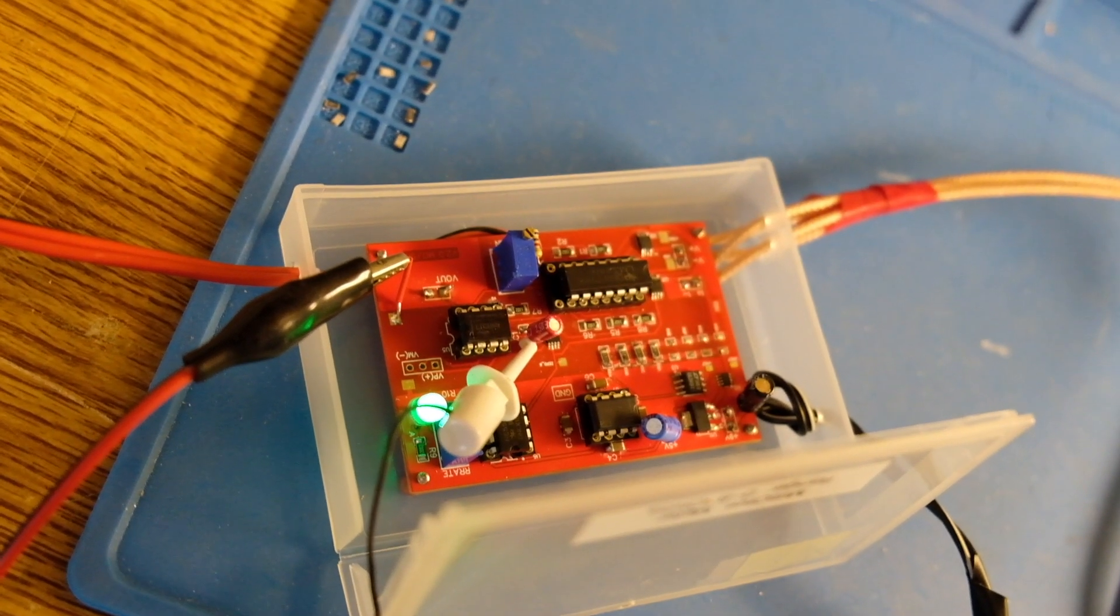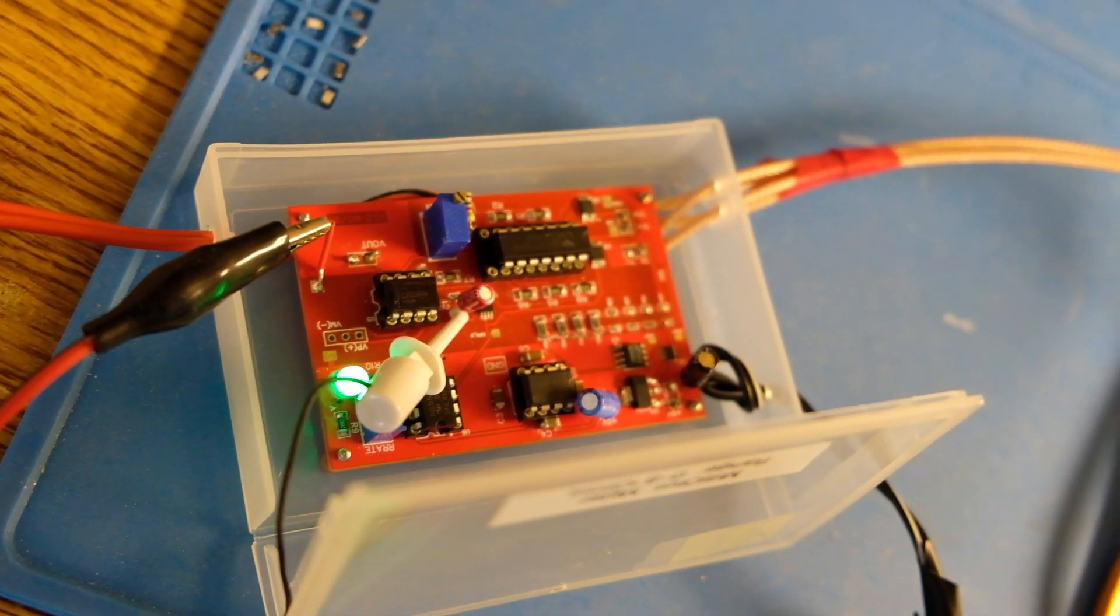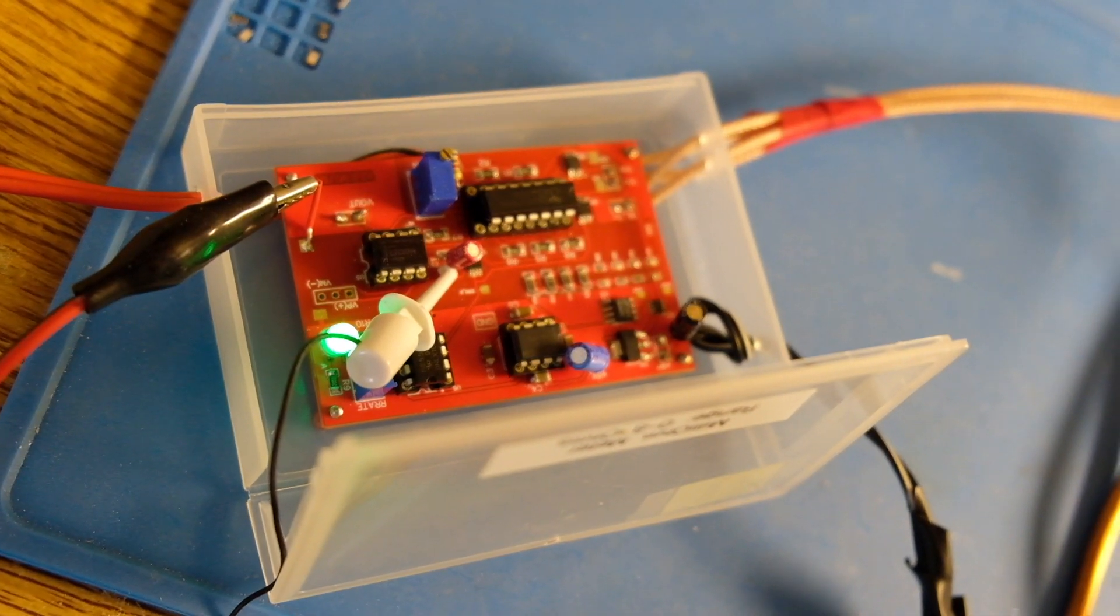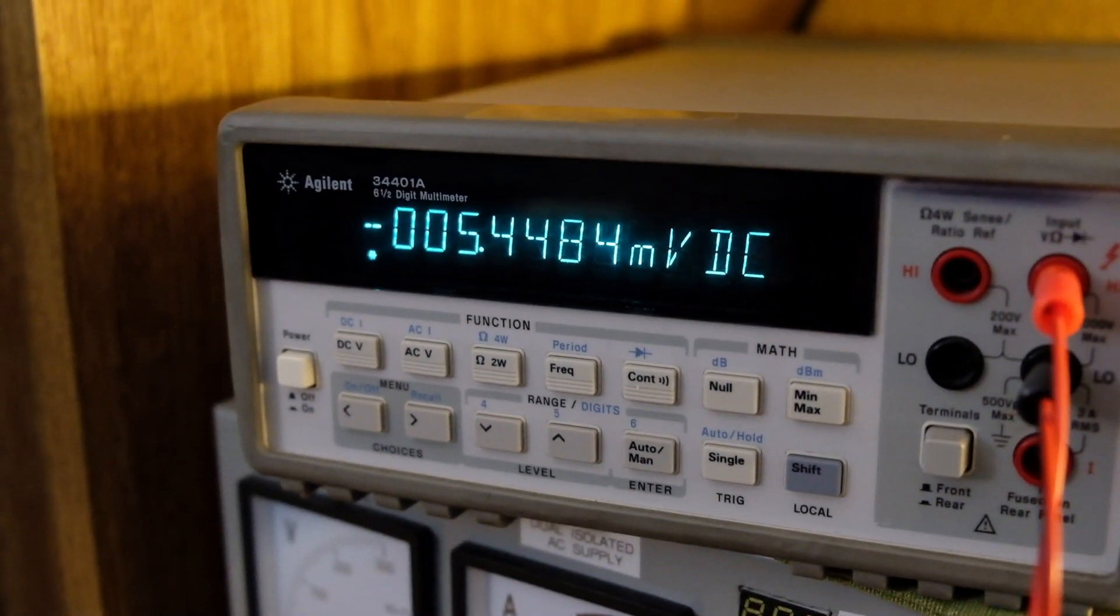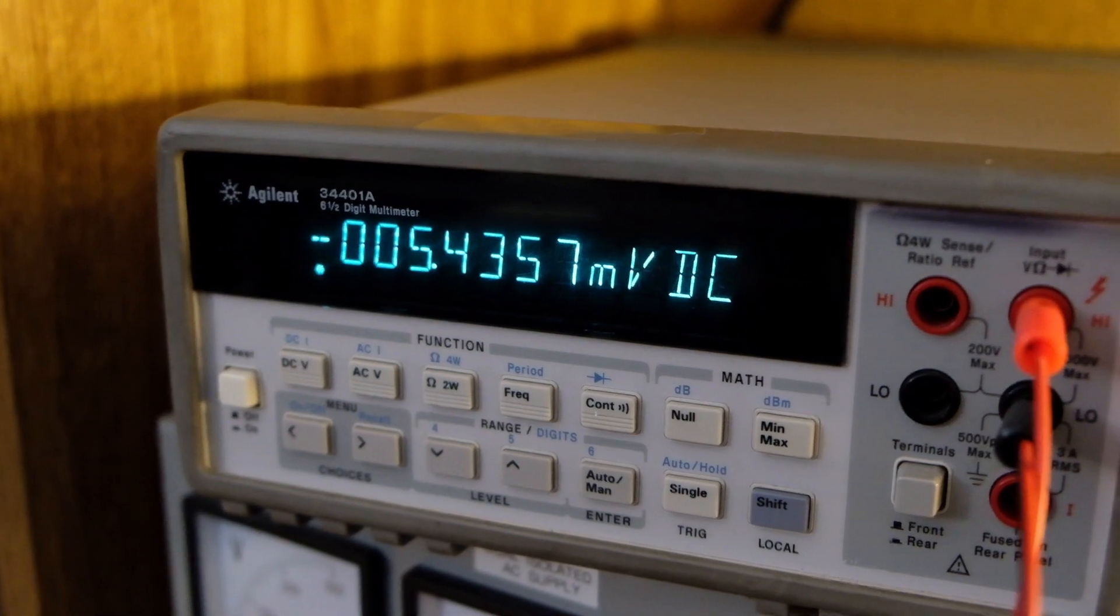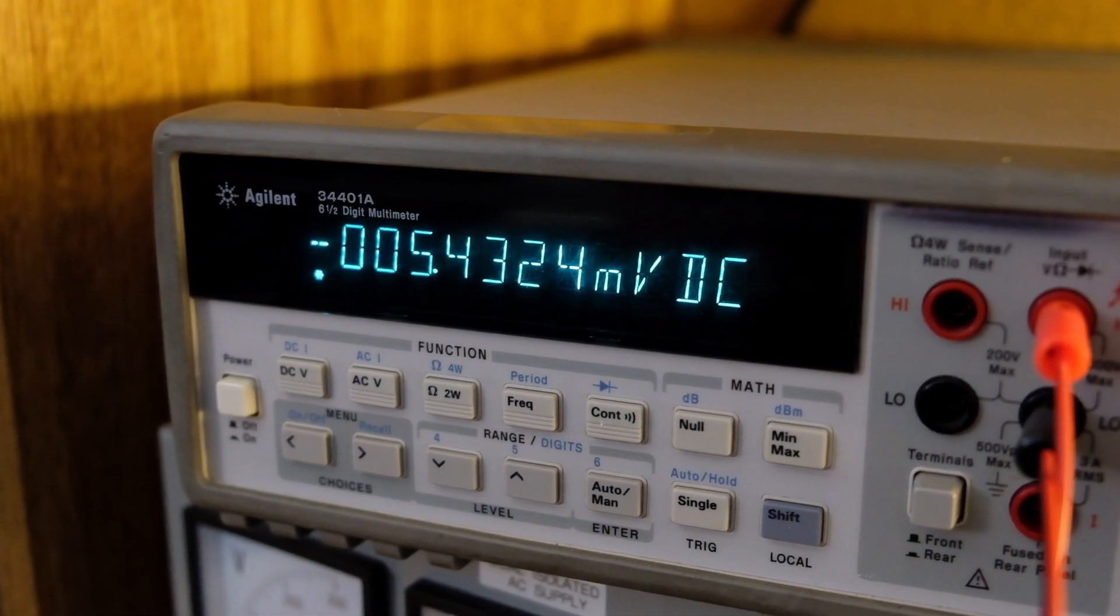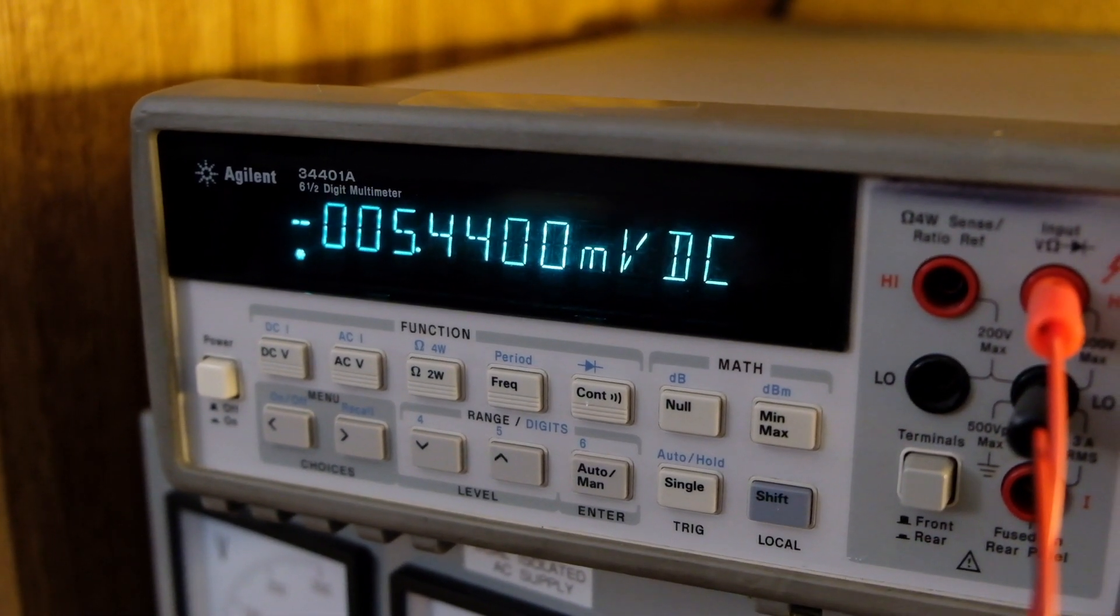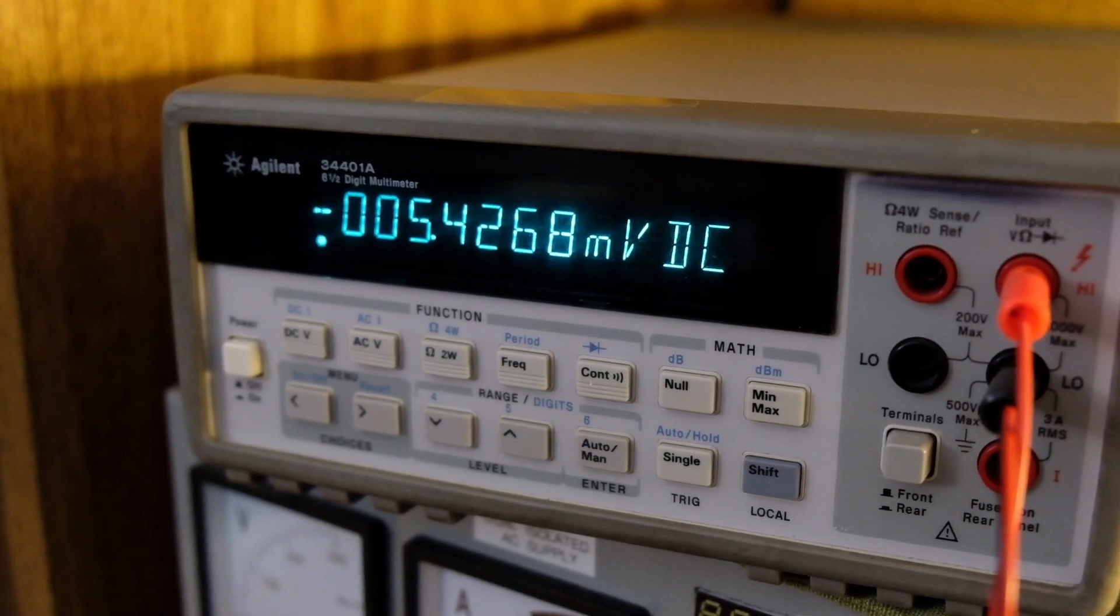I was also curious about the offset that was being held on the capacitor for the offset cancellation circuit. And I'm probing that right now on the capacitor. And that offset as read by the meter is minus 5.46 millivolts. That means the offset that is in the entire chain is plus 5.4 millivolts. And that is fairly stable. I did the same measurement yesterday and it hasn't changed.